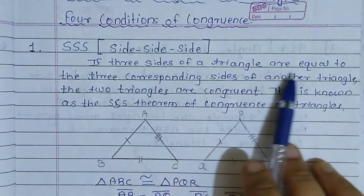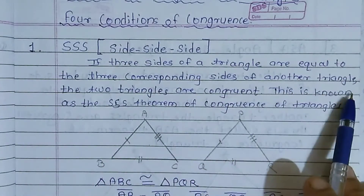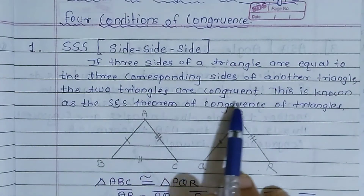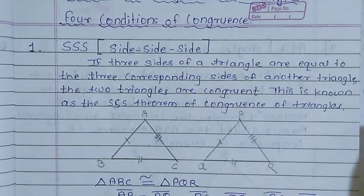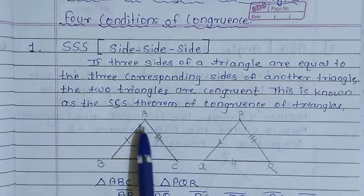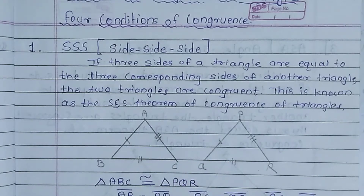First, let's learn the SSS condition. If 3 sides of a triangle are equal to the 3 corresponding sides of another triangle, the 2 triangles are congruent. This is known as the SSS theorem of congruence of triangles. When the 3 sides of one triangle are congruent to those of another, we say they are congruent to each other — this is SSS.